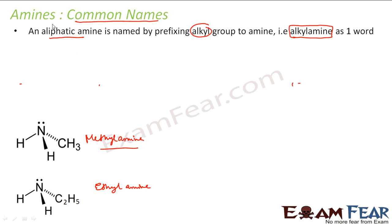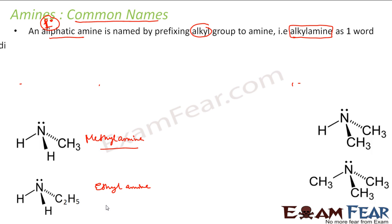This naming applies to primary, or one degree, aliphatic amines. For one degree amines, we just use alkyl amine as the common name — methylamine, ethylamine, propylamine, butylamine, isobutylamine, and so on. Alkyl amine is the word used for one degree aliphatic amines.